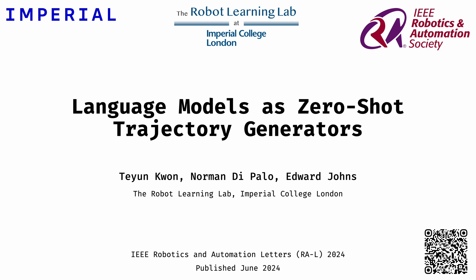In this video, we present language models as zero-shot trajectory generators, an investigation into how large language models, or LLMs, can be used to generate end-effector trajectories for a robot arm to complete everyday manipulation tasks in a zero-shot manner.